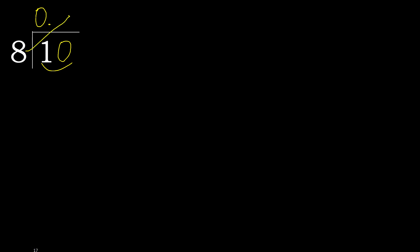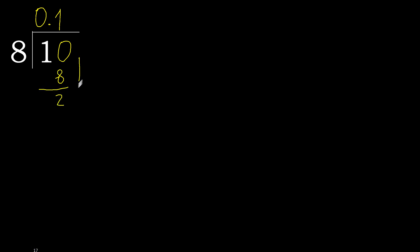8 multiplied by which number is nearest to 10 but not greater? 8 multiplied by 2 is 16, which is greater. 8 multiplied by 1 is 8, which is not greater. Subtract. Next — there is no number, therefore complete. Always complete with 0. Point is here: 0 point.